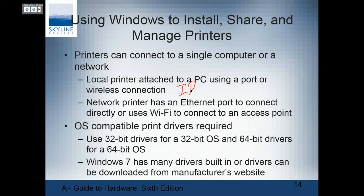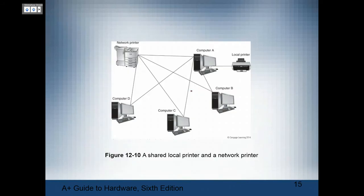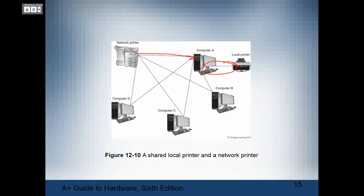OS-compatible drivers are required — 32 or 64-bit. Windows 7 has a lot built in. A network printer has to have a print server somewhere to control access to it. You can install network printers through Active Directory, but you can't install local printers without administrator permission. Typically you're going to have to be an administrator to install on your virtual machines. A local printer is directly attached — you manage the printer. A network printer, the network administrator manages the printer.